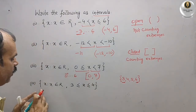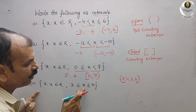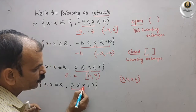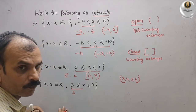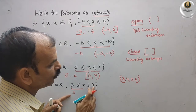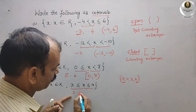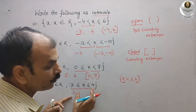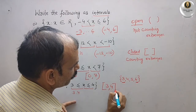The fourth question: the set of all x such that x belongs to the real numbers and 3 ≤ x ≤ 4. Reading the inequality, x should be greater than or equal to 3, so we are counting 3. And x should be less than or equal to 4, so we are counting 4 as well. Since we are counting both extremes, we write this as [3, 4] with big brackets on both sides.